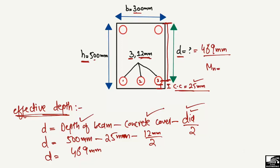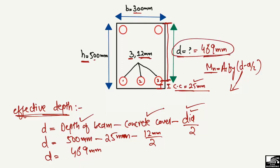In our design we use this effective depth. For example, the moment capacity formula is: area of steel × Fy × (D − a/2). As you can see in the formula, we need the effective depth of the beam. The effective depth is basically the distance from the extreme top of the beam to the mid of the steel bar.